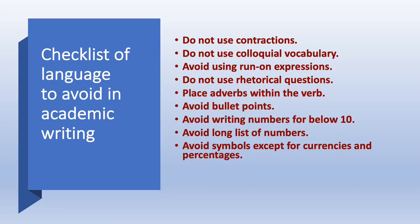This is a checklist of language to avoid in academic writing. Do not use contractions — not don't, doesn't, won't — you have to use do not, does not, will not. Do not use colloquial vocabulary or chatty language. Avoid run-on expressions. Do not use rhetorical questions. Place adverbs within the verb. Avoid bullet points. Avoid writing numbers below 10 as numerals — you have to spell out those numbers. Above ten, you can use numerals. Avoid long lists of numbers. Avoid symbols, though you can use symbols for currencies and percentages.